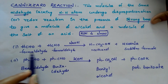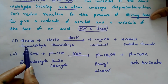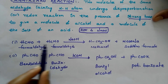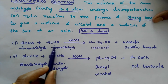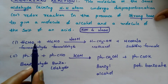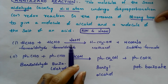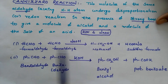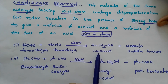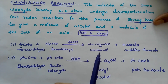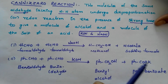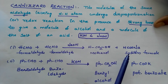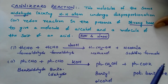For example, formaldehyde — one molecule of formaldehyde and another molecule of formaldehyde — both react with each other in the presence of a base like NaOH. Here, one formaldehyde converts into alcohol, that is methanol, and the other formaldehyde is converted into the salt of that molecule, that is sodium formate.